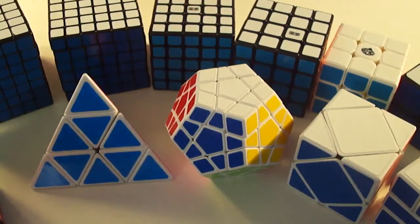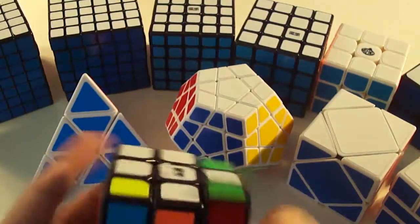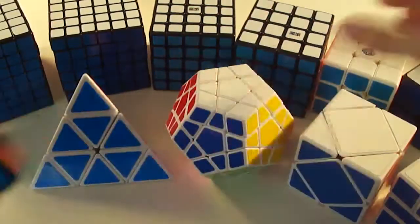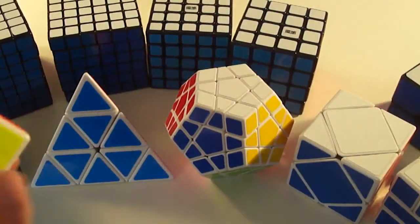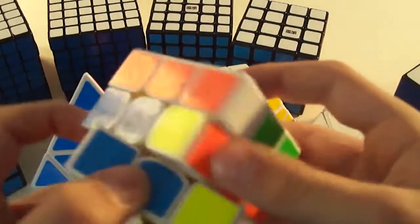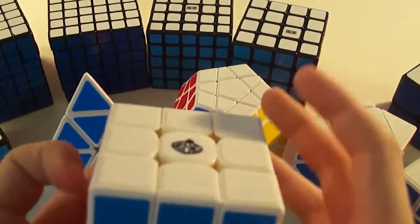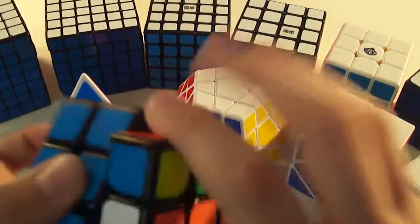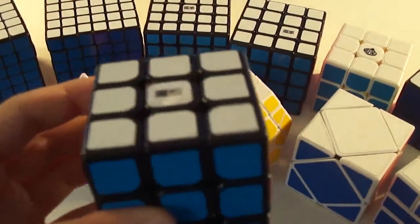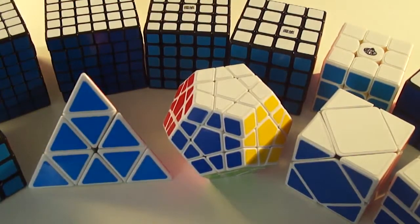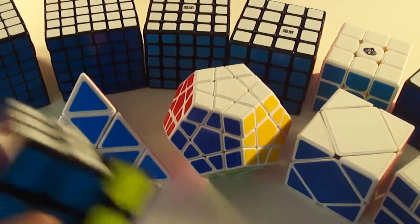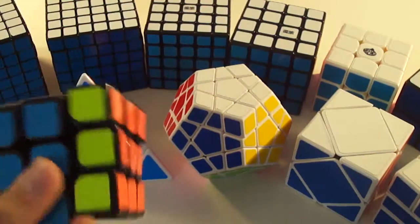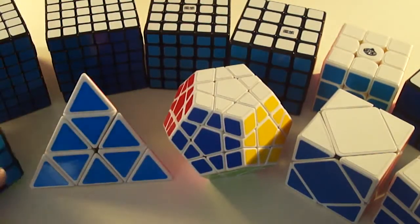For 3x3 OH, I'm going back and forth between the Mini AoLong and the MeiYing. The AoLong is slightly smaller, but I don't know. Currently I'm leaning more towards the AoLong, but it can pop a little, so I'm not sure if I should use the MeiYing or not. 3x3 OH might be something I would do; I'd have to get a lot better at it though. Can't believe Felix got 6.88 on it. Crazy.